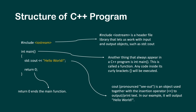We'll see this practically so don't get confused. `cout` — pronounced as 'see-out' — is an object used together with the insertion operator (`<<`) to output or print text. In our example it will output 'Hello World' to the console screen. The last line is `return 0`, which is what the main function returns. This is the basic structure of C++ programming and we'll look at it in detail practically in the next video.